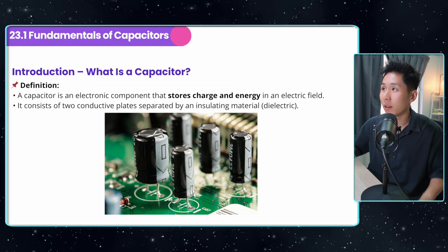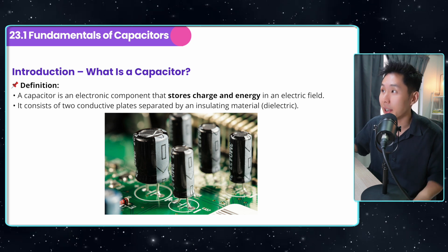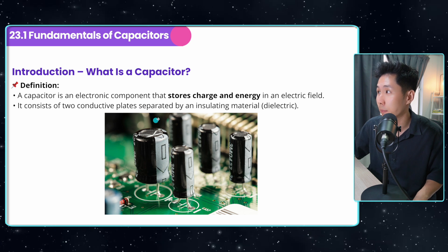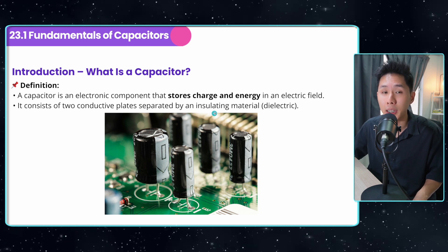And this is the chapter outline. A capacitor is an electrical component that stores charges and energy in a circuit. It consists of two conductive plates separated by an insulating material.